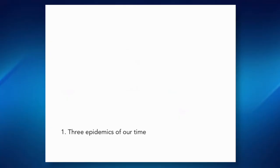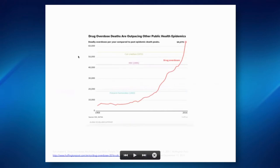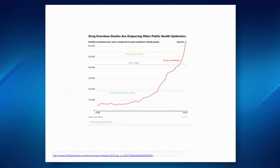Let me frame this by making the case that guns, opioids, and obesity are the three epidemics of our time. Let me start with opioids. We're now at about 64,000 deaths from opioids a year — higher than the peak of the motor vehicle death epidemic in 1972, higher than the peak of the HIV epidemic in 1995, and higher than the peak of the gun epidemic in 1993. There's been an extraordinary exponential rise in deaths from drug overdoses. My question is: why were we not talking about this in 2010 when only 40,000 people were dying from this? This is an epidemic that has really transformed parts of the country.